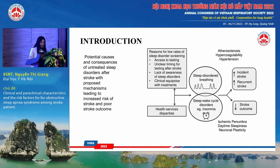Stroke and sleep apnea syndrome are both common, associated with significant morbidity and mortality. The role of sleep disorder in stroke outcome and recurrent stroke has become a pressing question. Hemodynamic, metabolic, and hematologic changes during sleep-related breathing disorder — in the form of decreased cerebral perfusion and increased coagulability — are possible pathogenetic mechanisms for stroke.